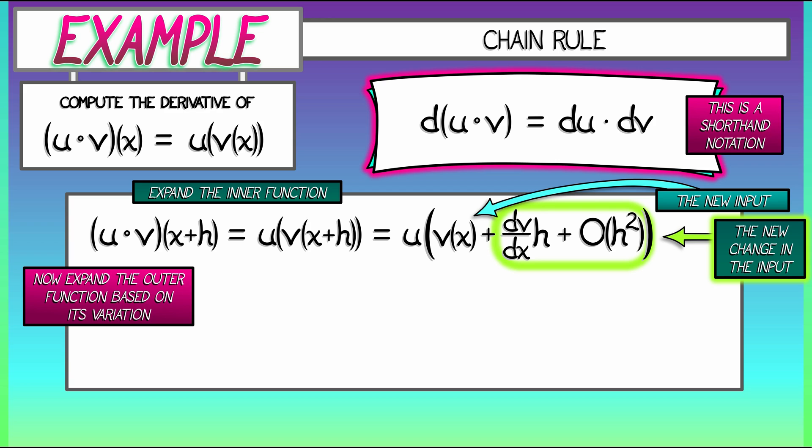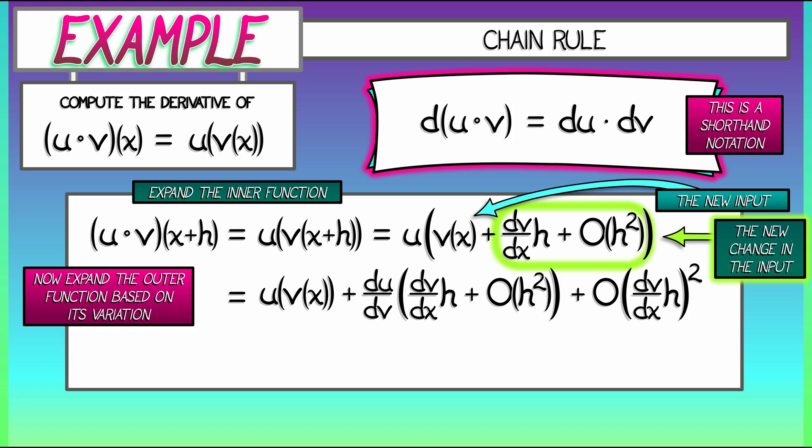Now what we can do is expand u. The zeroth order term is going to be u of v of x. Then we take the derivative du/dv, the derivative with respect to u's input, and we multiply that by the perturbation, that is dv/dx times h plus big O of h squared. Now that's not all. We have the higher order terms, but those are all in big O of the perturbation squared. The leading order term of that perturbation is dv/dx times h, so we take that and we square it.